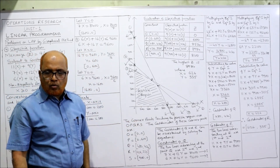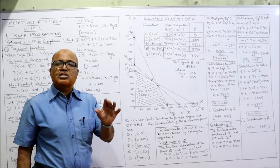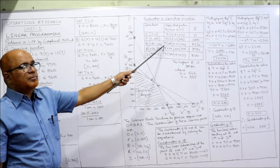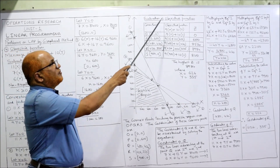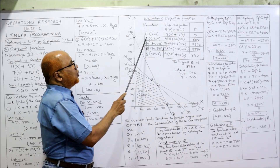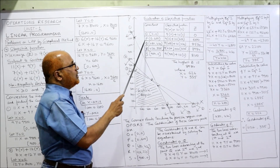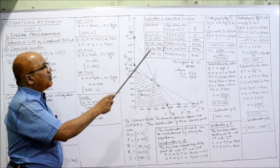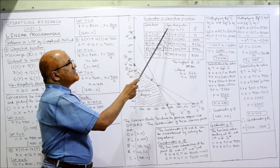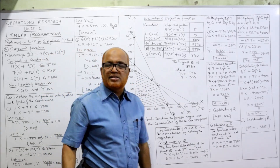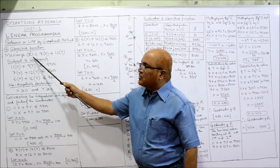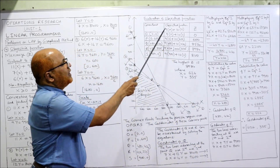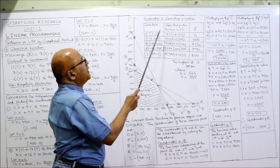After getting all the coordinates, we evaluate the objective function Z = 9x + 10y at each corner point. The table of corner points is: O (0,0), P (0,600), Q (480,420), R (626,335), and S (900,0).